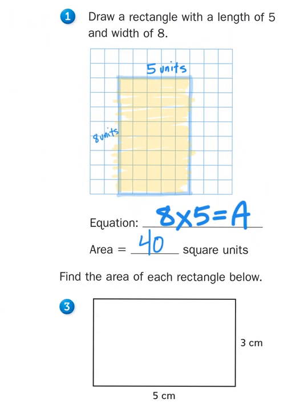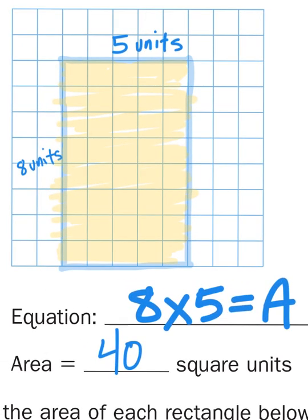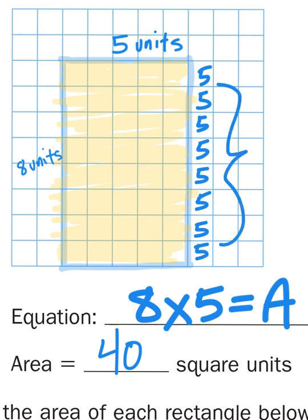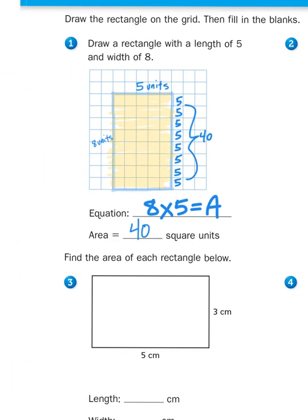5, 10, 15, 20, 25, 30, 35, 40. That is 8 groups of 5. And if I go to my rectangle here, if I were to count each of these 5s, this is 5, this is 5, this is 5, and I repeat myself 8 times. If I were to add all those 5s together, that would give me 40. So, the area of this rectangle is 40 square units.